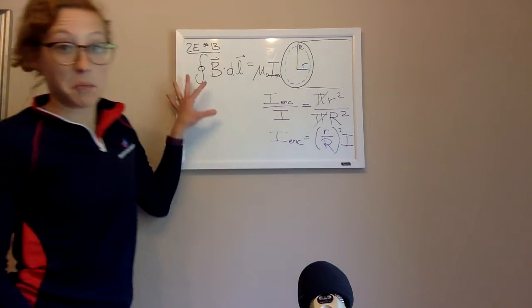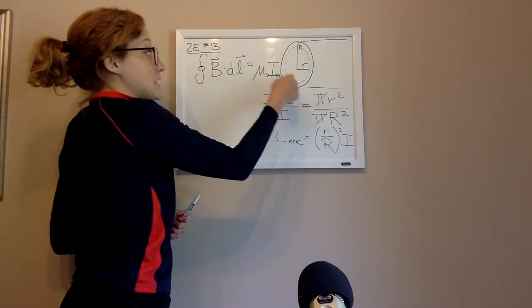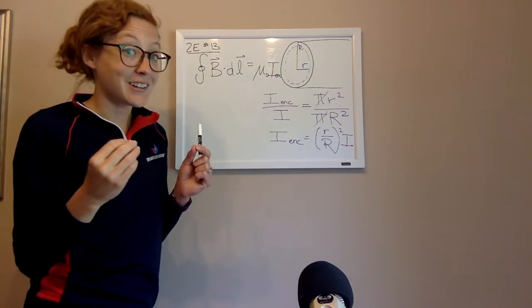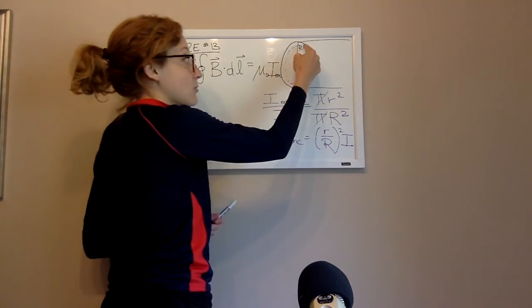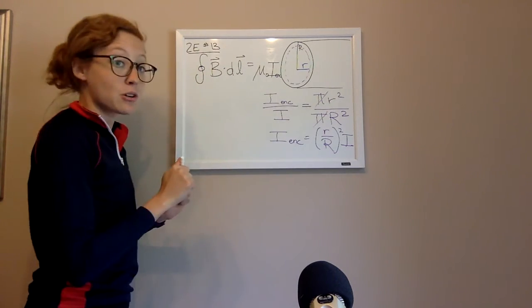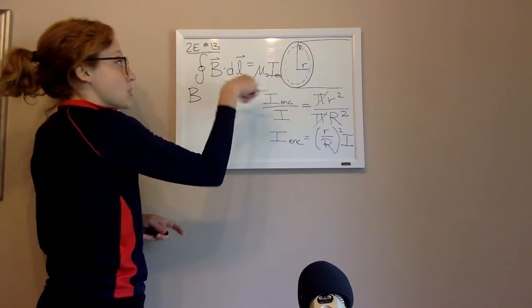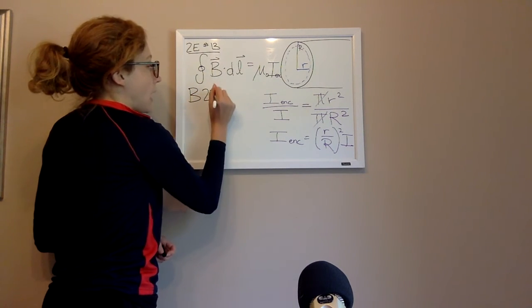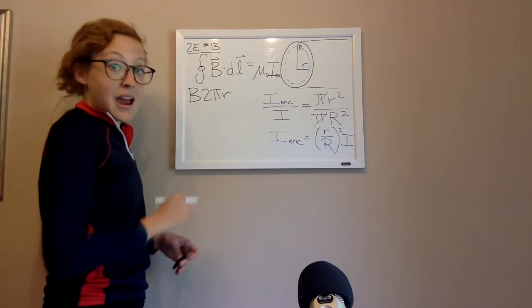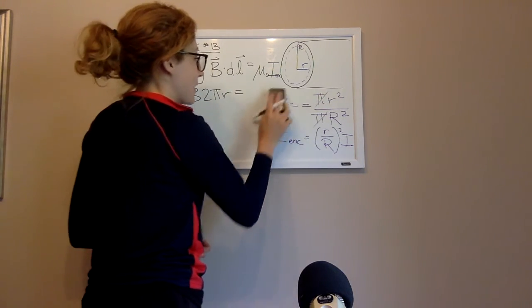Because now I can just complete the rest of my Ampere's Law problem. Well, if I integrate B over DL, remember L here, we're talking about length. So they're asking for the length or the circumference of that inner blue circle there. So this is going to be B times the circumference, which is 2 pi little r. And that equals, I need to make a little bit of room here, sorry about that.